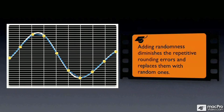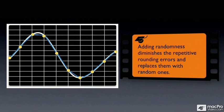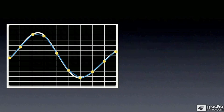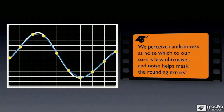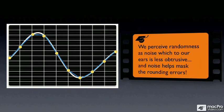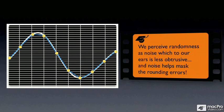Dithering diminishes the repetitive rounding errors and replaces them with random ones. Noise. And noise to our ears, especially in music, is really less obtrusive, and at the same time helps mask the rounding errors themselves.